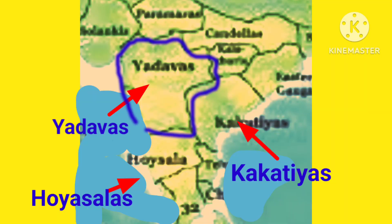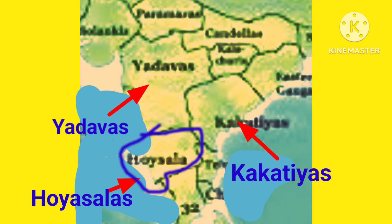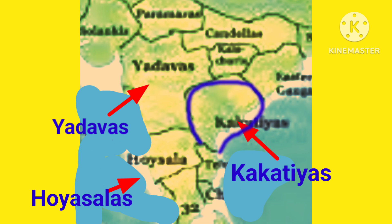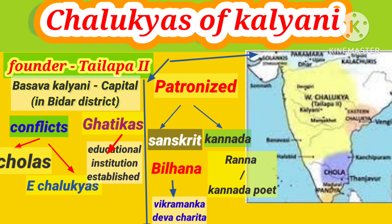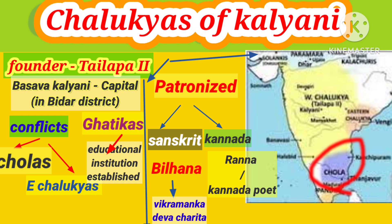The map marking is shown here. This is the Hoysala Kingdom area, this is the Kakathiya Kingdom region, this place belonged to the Western Chalikyas, this to the Eastern Chalikyas, and this place belonged to the Chola dynasty.